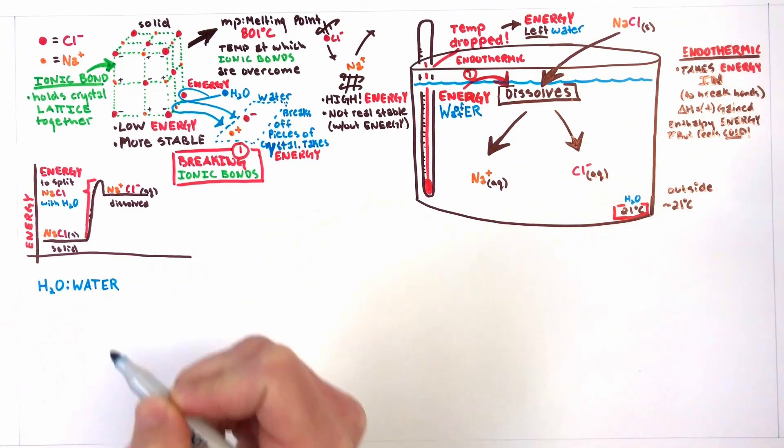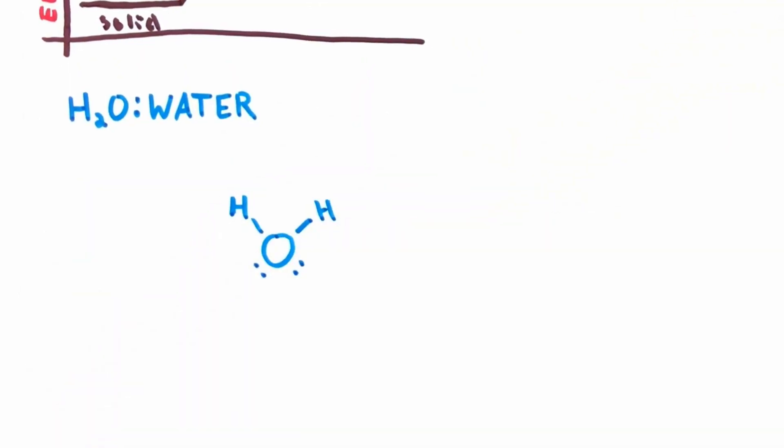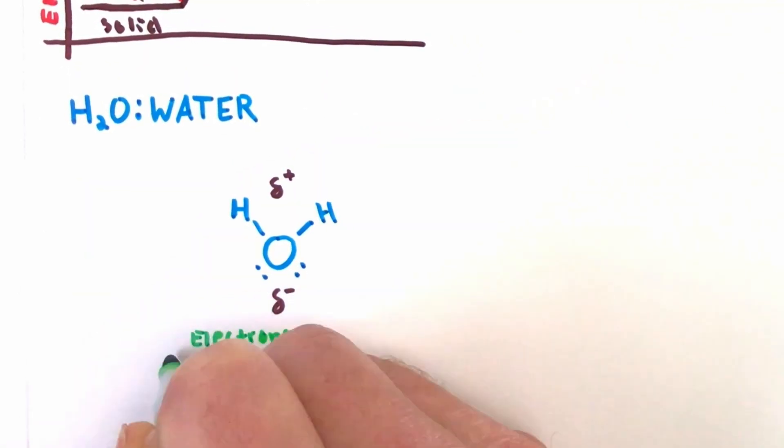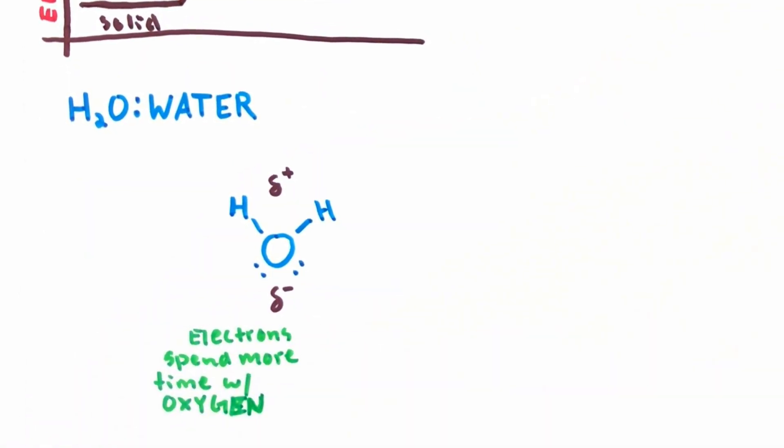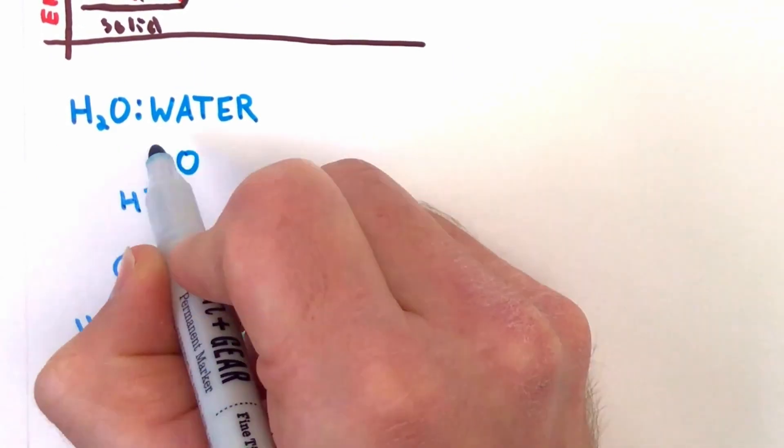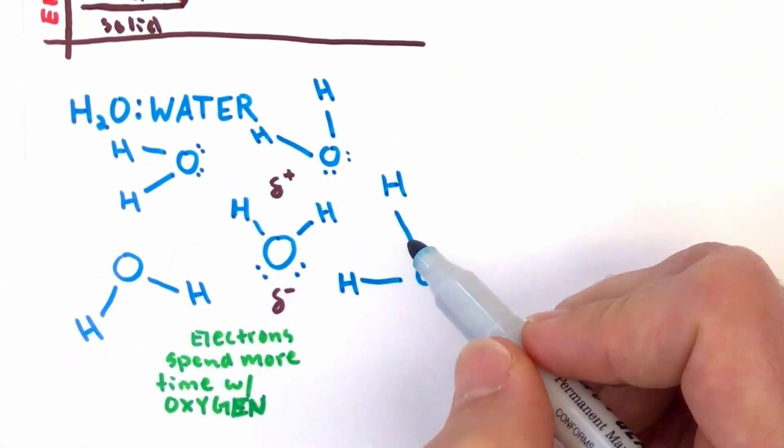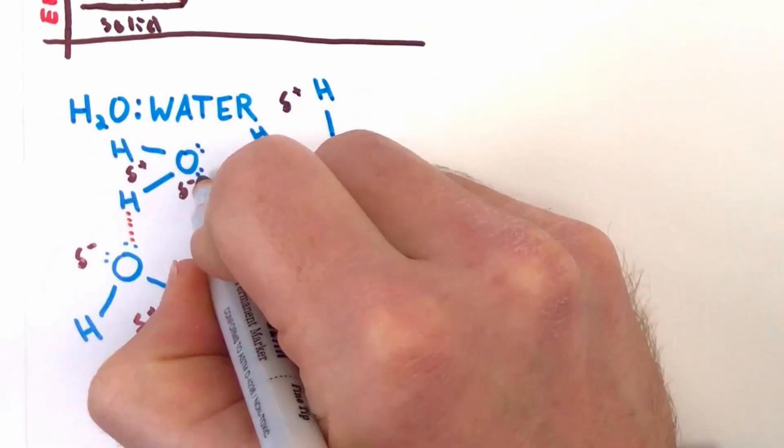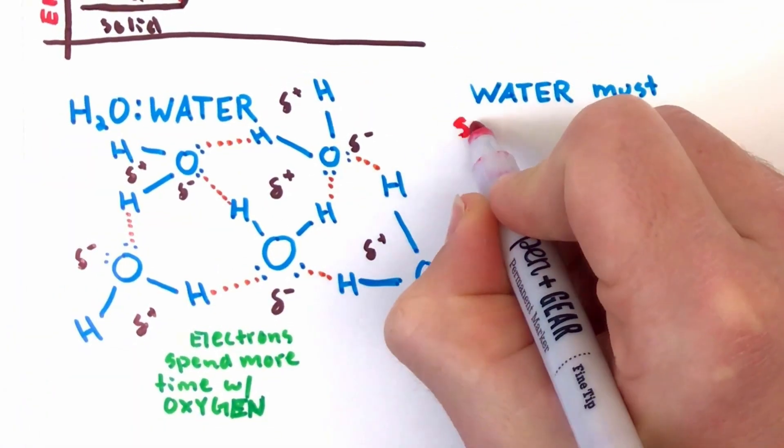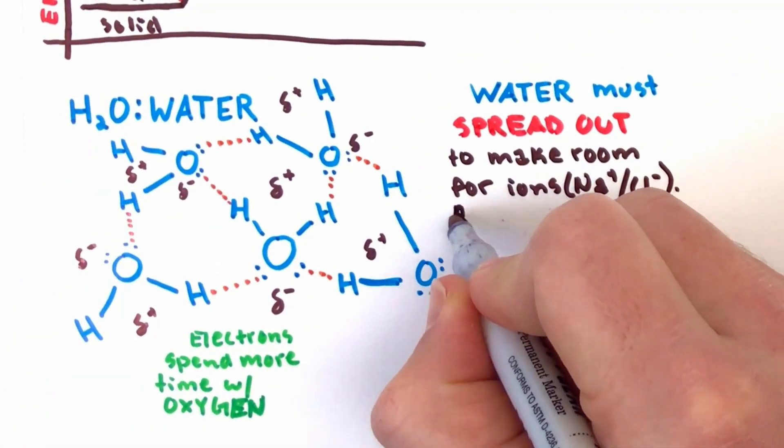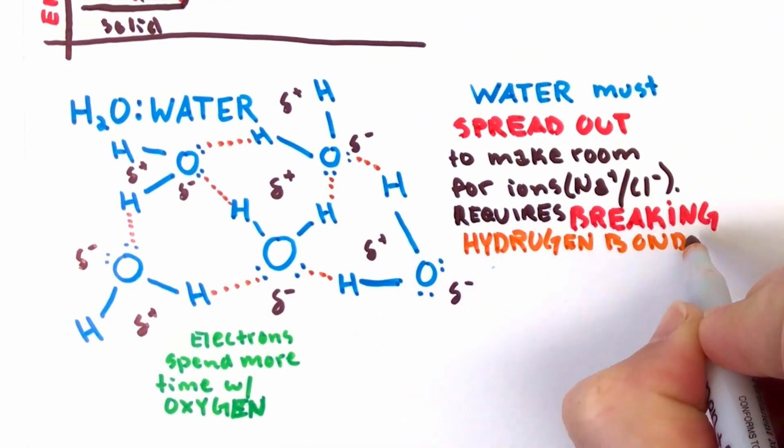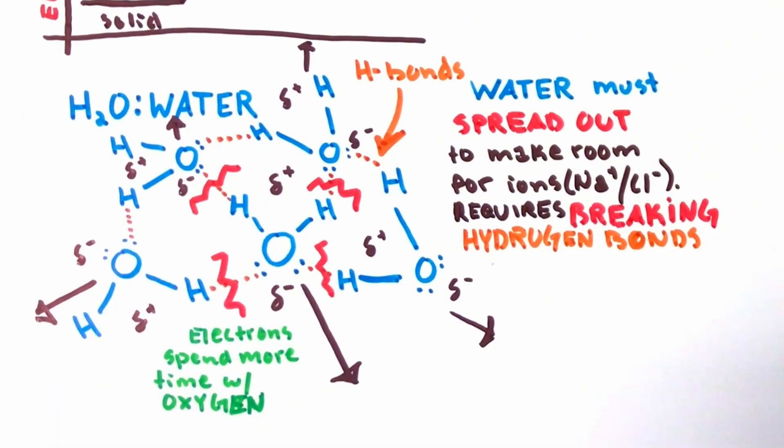The oxygen end of a water molecule is partially negative, which means the electrons hang out with it more, which exposes the positive protons of the hydrogen. Logically enough, neighboring waters will arrange so that negatives stick to positives with what are called hydrogen bonds shown in red. Now water must spread out to make room for the sodium and chloride ions that are dissolving and this requires breaking hydrogen bonds. More energy is taken from the water cooling it.